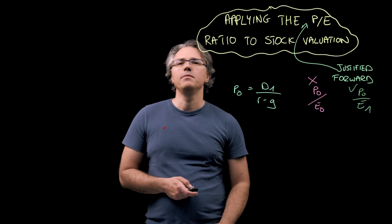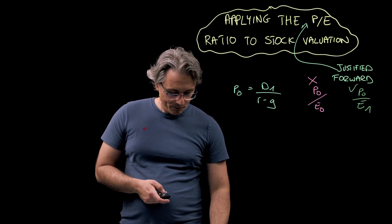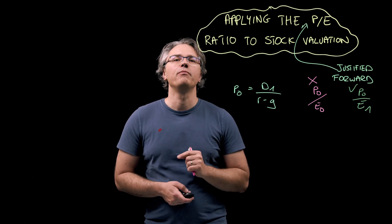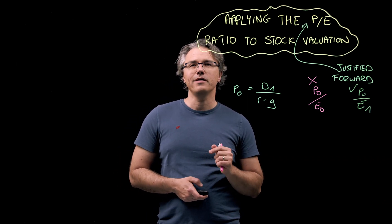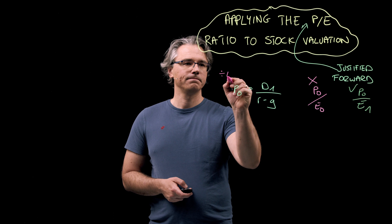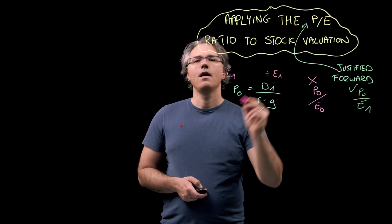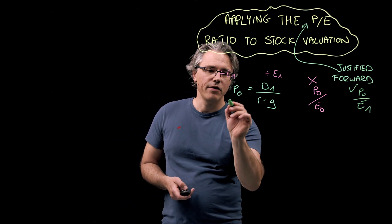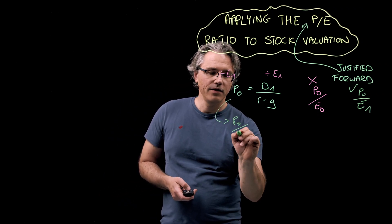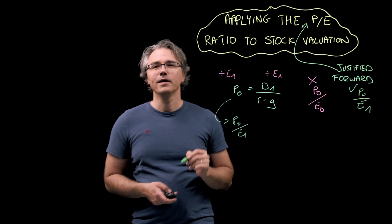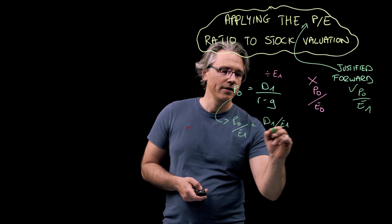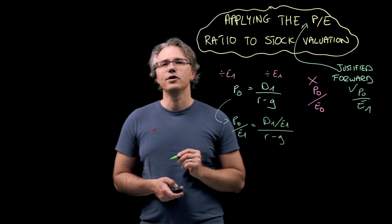Okay, so how do we proceed? Well, over here, we simply divide both sides of the equation by E1. And we end up with P0 divided by E1 equals D1 divided by E1 over R minus G.